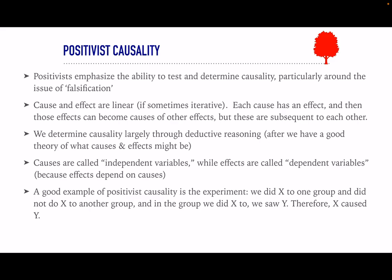If we're going to think like a positivist about causality, then we're going to think about falsification. For a positivist, cause and effect are linear, if sometimes iterative. One thing is a cause, the other thing is the effect. If that effect then has other effects, then it becomes a cause. So something can be a cause and an effect, but not in the same process — it can't cause itself. So there's a linear order.